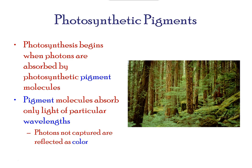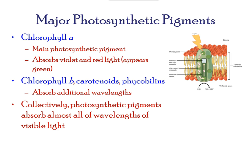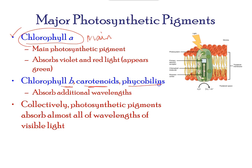There are numerous kinds of pigments that absorb photons. Chlorophyll a is the main photosynthetic pigment and it absorbs red and violet wavelengths. Chlorophyll b and other pigments absorb additional wavelengths. Collectively, all of these pigments help absorb the maximum amount of solar energy.